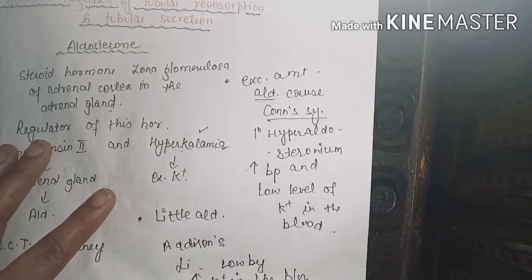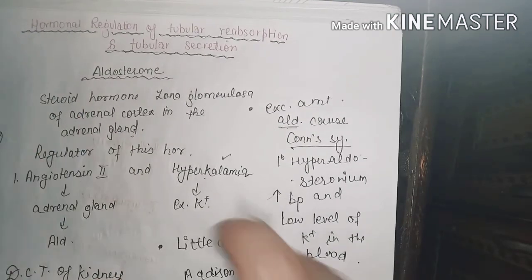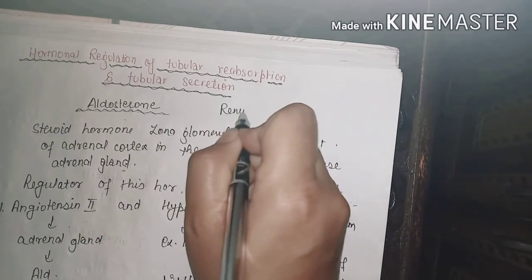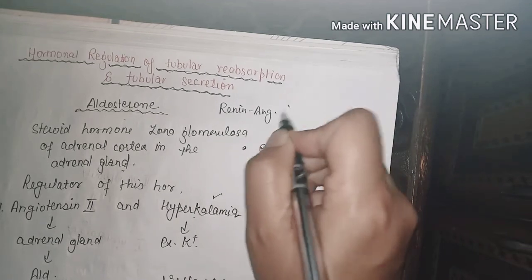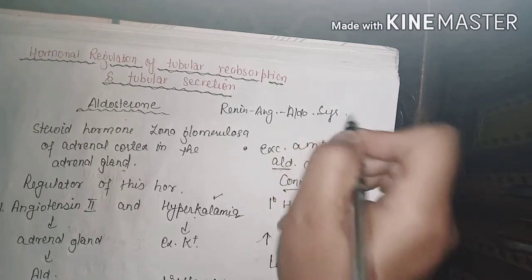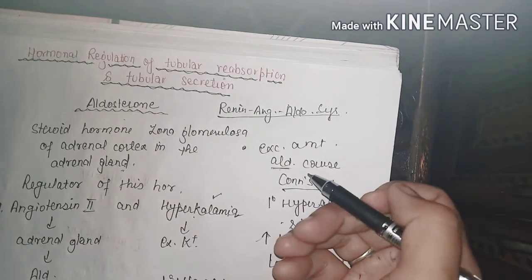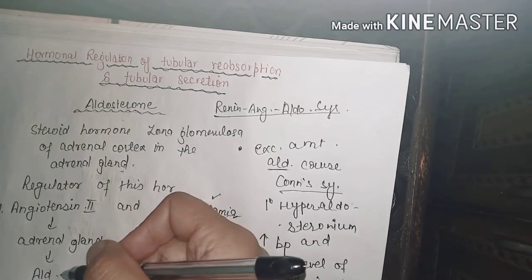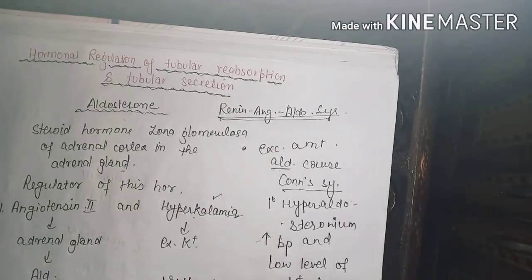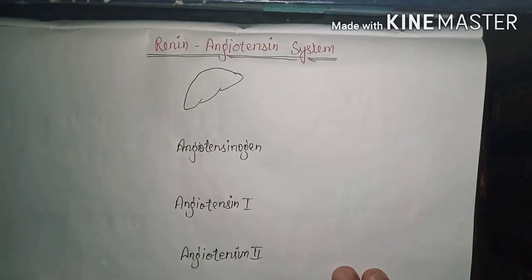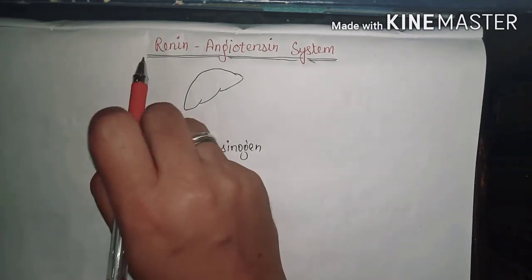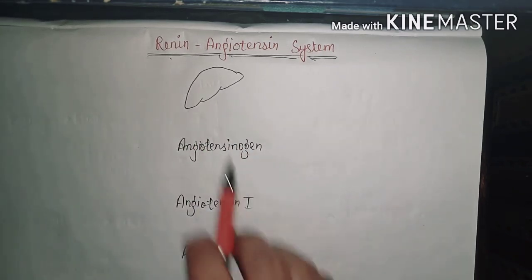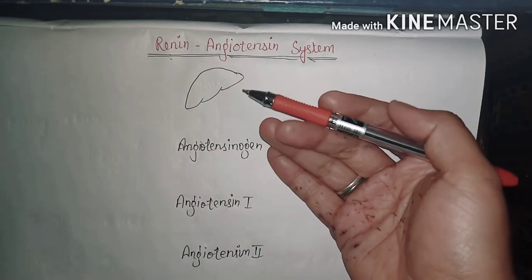Aldosterone is regulated through the renin-angiotensin-aldosterone system, also known as the renin-angiotensin system. Renin is an enzyme secreted from the juxtaglomerular cells of the kidney in response to low blood pressure.